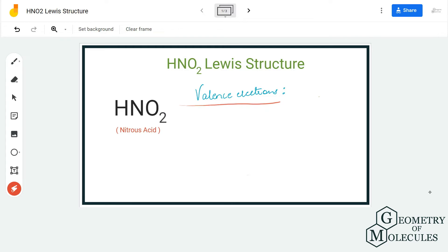Here we have one atom of hydrogen, two atoms of oxygen, and one atom of nitrogen. Each oxygen atom has six valence electrons, nitrogen atom has five valence electrons, and hydrogen atom has one valence electron.